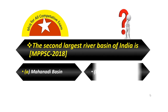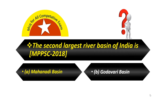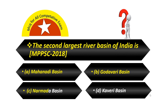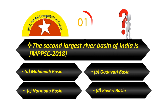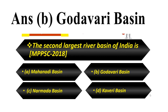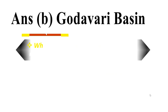The second largest river basin of India is: Option A — Mahanadi basin. Option B — Godavari basin. Option C — Narmada basin. Option D — Cauvery basin. Your answer is Godavari basin.